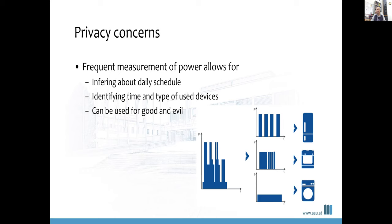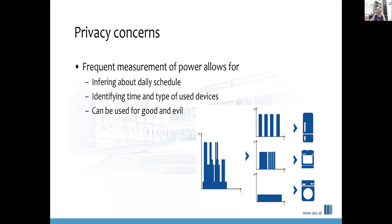It has even been shown that with more frequent measurements you can identify the time and type of used devices. A famous — or rather infamous — paper showed an experiment where they could identify the type of television program being watched by analyzing power consumption. This was based on synchronized television; streaming wouldn't apply. Still, there is a lot of information in the power reading that can be used for good and for evil.